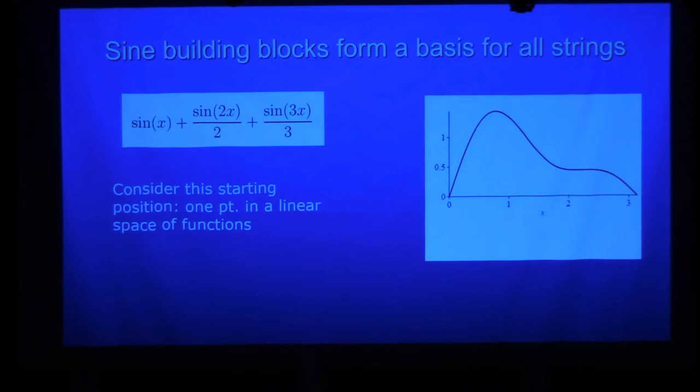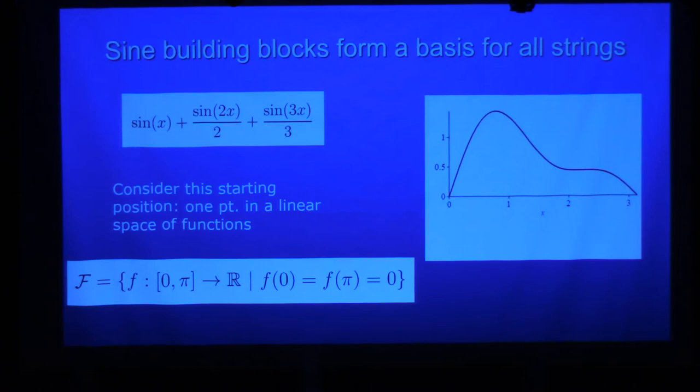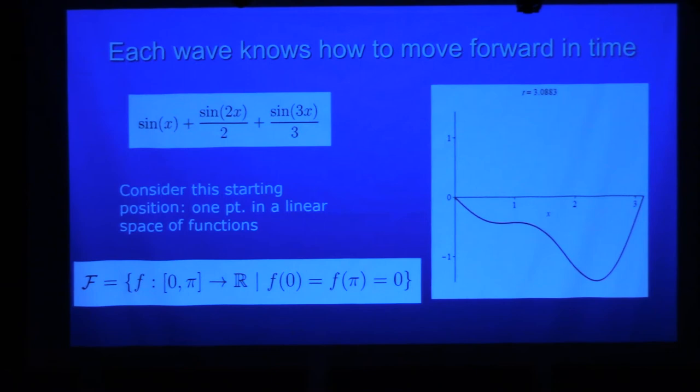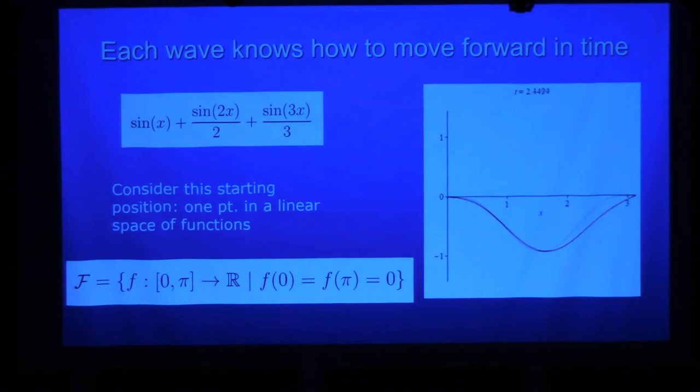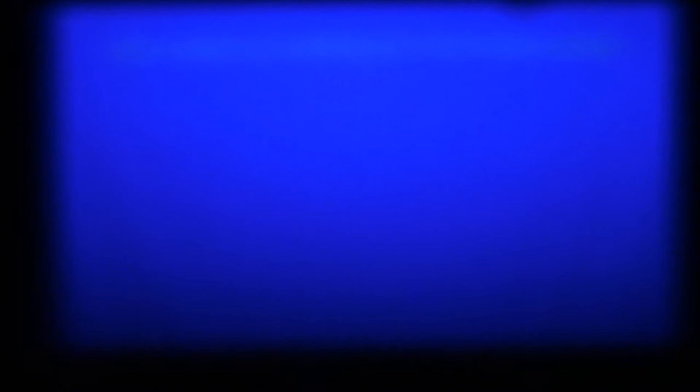So, and you could think of this as the starting point in a linear space of functions. That's my function space. And say, here's where I wanted to start. Well, each of these waves knows individually how to move forward in time. And when they move forward in time, they look like this. And again, this has this graceful dancing flow. This equation is somehow right because it is showing us something that we interpret as, oh, that's graceful. That's a beautiful dancing motion.